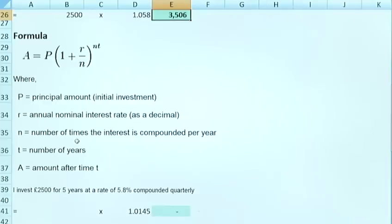Where N is the number of times the interest is compounded per year, so it might be compounded monthly or quarterly or daily for example.